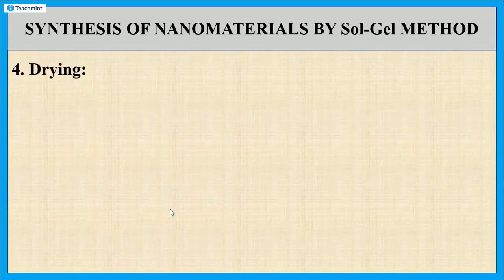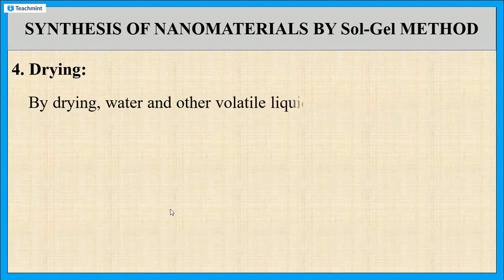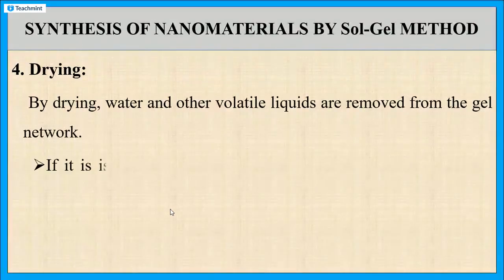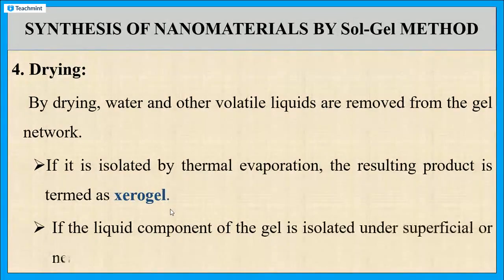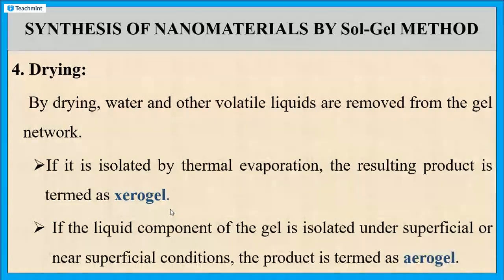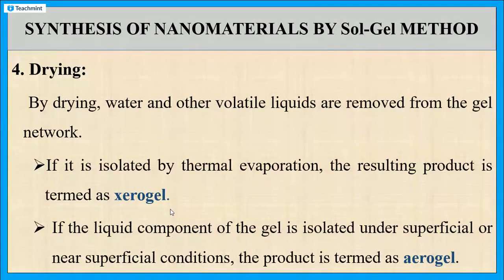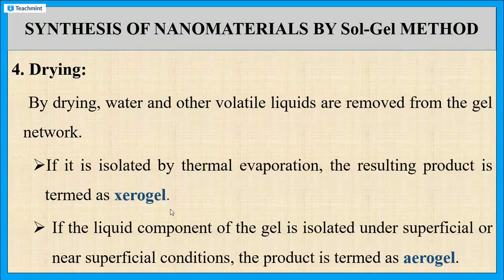The last step is drying. When we dry the gel, the water and other volatile liquids are removed from the gel network. If the liquid component of the gel is separated by simple evaporation, then the obtained product is known as xerogel. If the liquid component of the gel is separated under supercritical or near-supercritical conditions — where supercritical means the liquid is above the critical temperature and pressure, behaving as both liquid and gas — then the obtained product is known as aerogel.